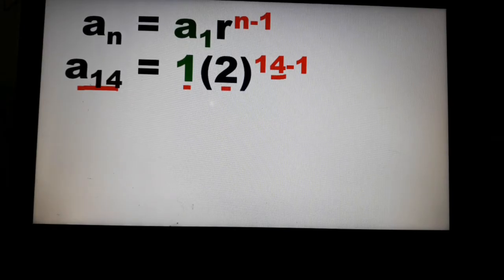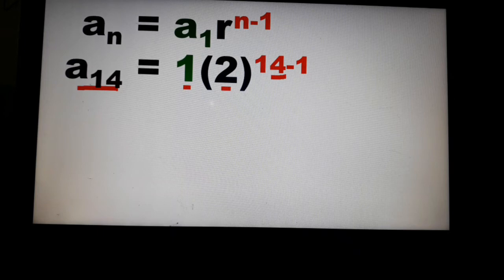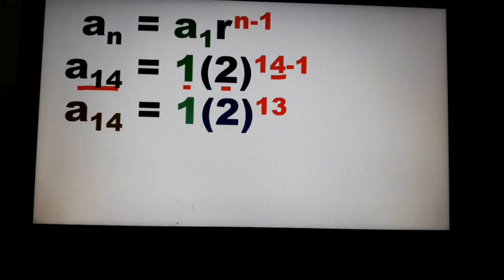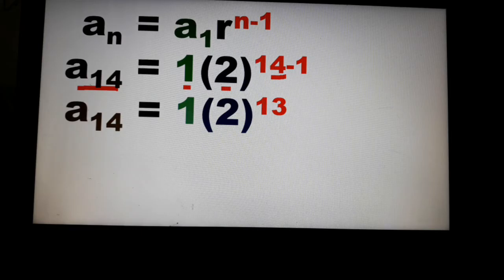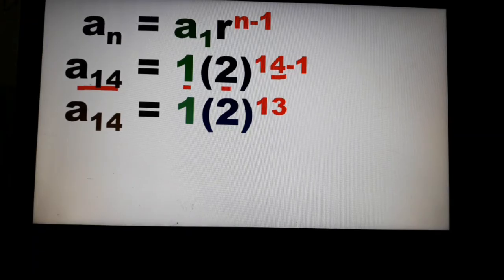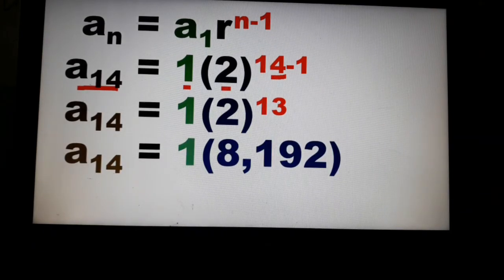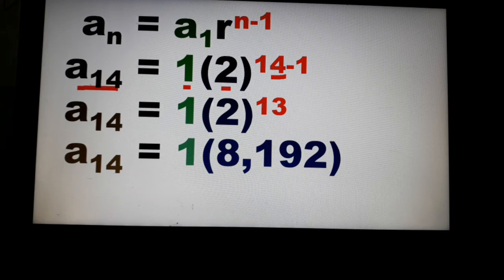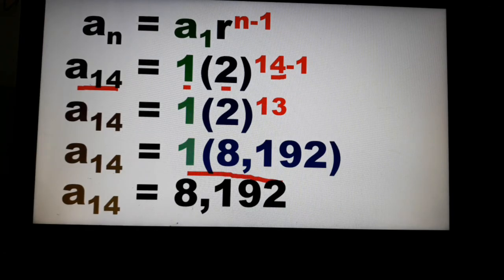So please start solving first the exponent. So 14 minus 1, subtract 14 and 1. You have a_14 is equal to 1 times 2 raised to 13. Now in your calculators, you press 2 raised to 13. In some calculators there's a button x raised to y. So you can use that. So you press 2 first. And then the button x raised to y. And then you press 13. Then press the equal sign. So you'll get the value 8,192. And then you multiply that to 1. So our 14th term is 8,192.